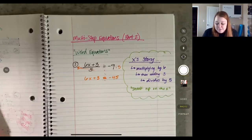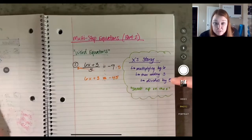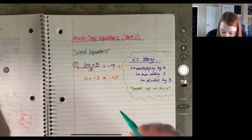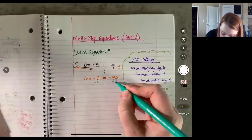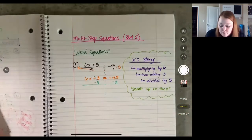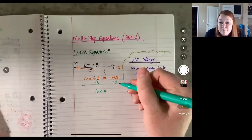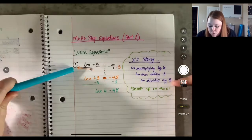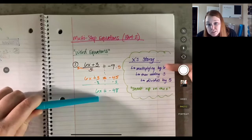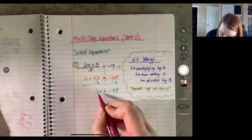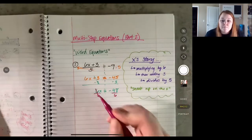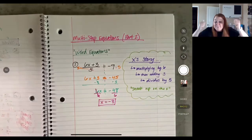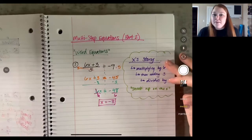Now it looks like a normal two-step equation. I got rid of the division by five, so now I get rid of the addition of three by subtracting three on both sides. The threes cancel out, leaving six x equals negative 45 minus three, which is negative 48. Last thing is to get rid of the multiplying by six, so I divide by six. Negative 48 divided by six is negative eight.